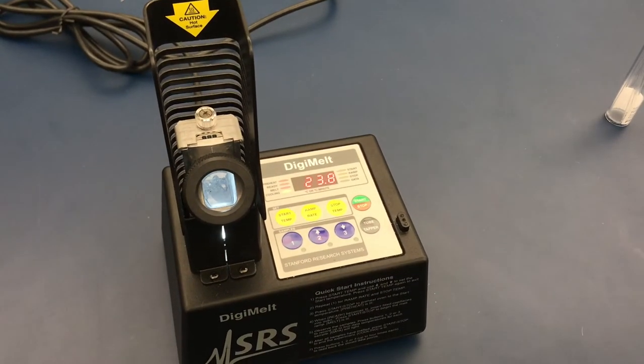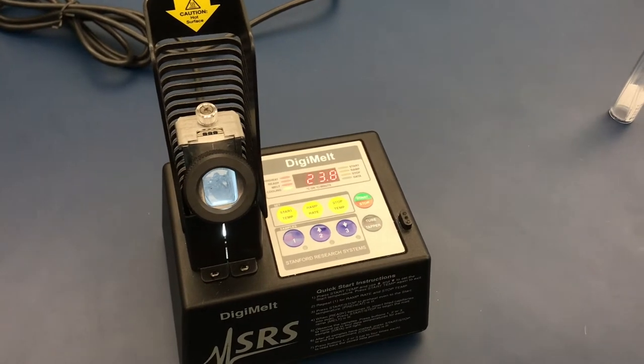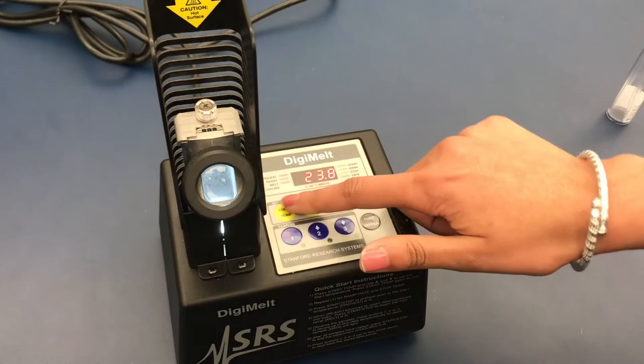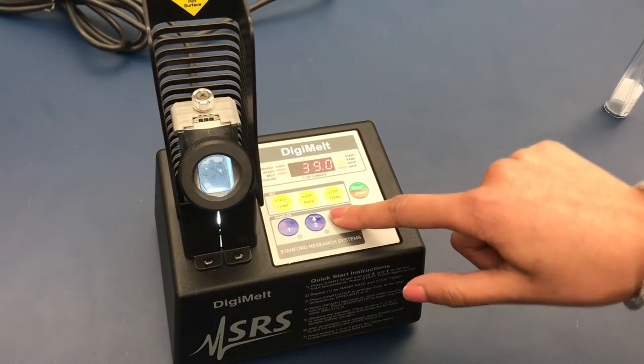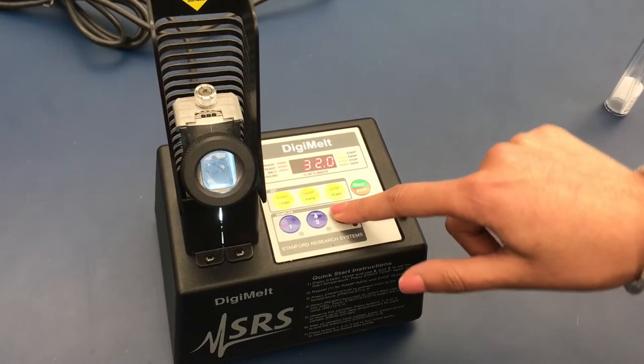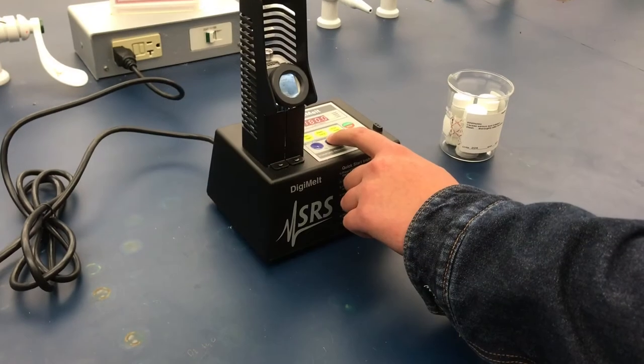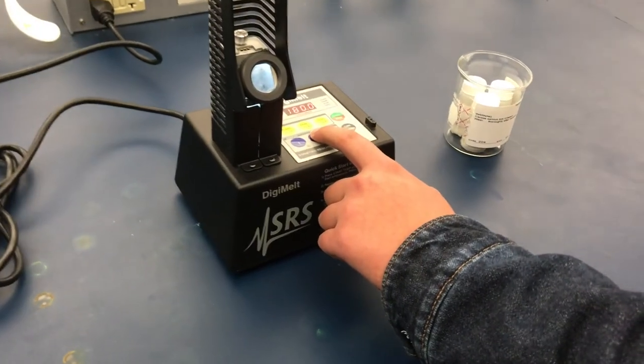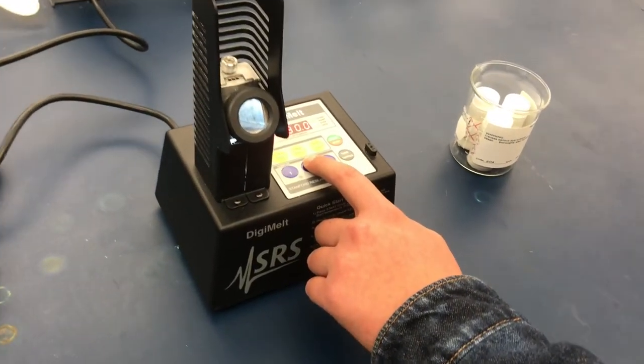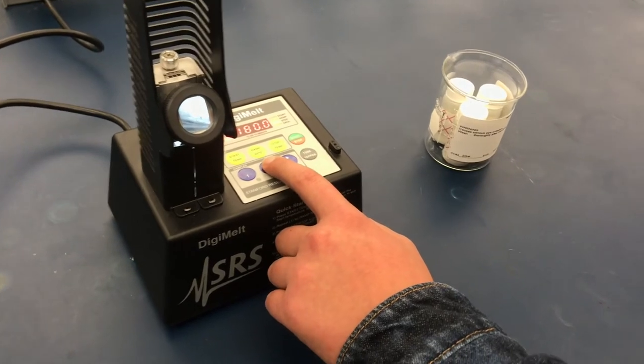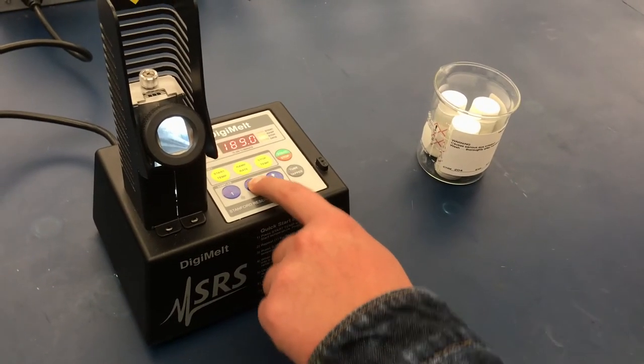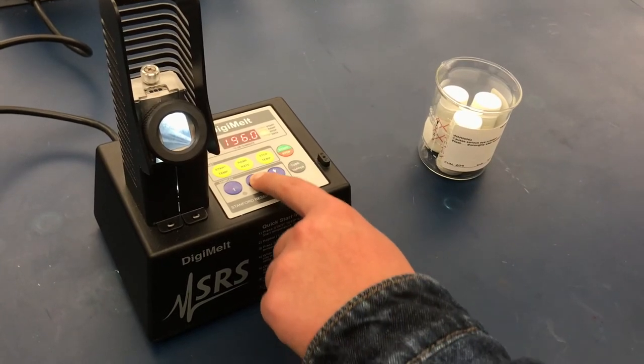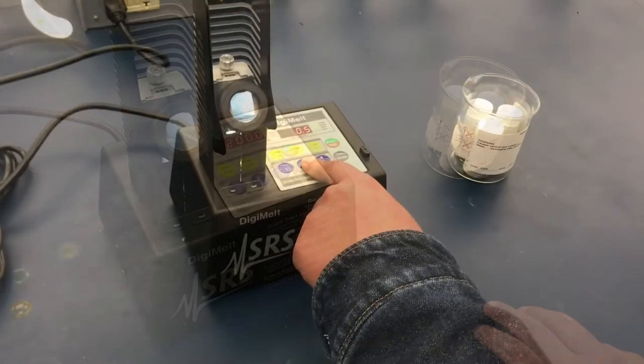You might or might not have an idea of what your melting range will be. If you are unsure, press start temp and press the down arrow until a low temperature number appears. If you have an idea, press start temp and use the arrows to a temperature below the predicted melting range. Next, set the stop temp to a temperature very high using the arrows regardless of whether or not you are sure of the melting range.